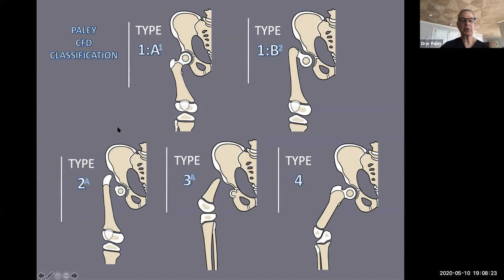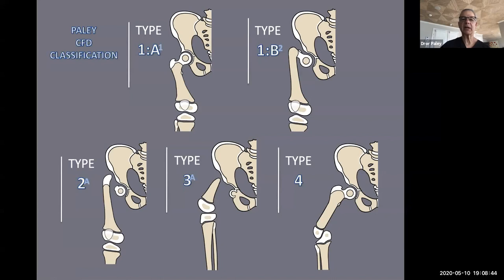Type 2 has a true disconnect pseudarthrosis. Type 3 has a diaphyseal deficiency. Type 4 is really a different disease — a distal deficiency more affecting the medial femoral condyle, and it is very rare, probably the rarest of all types. I won't be speaking about that. Today I'm going to speak particularly about the very deformed Type 1a and 1b, which are the most reconstructable types.